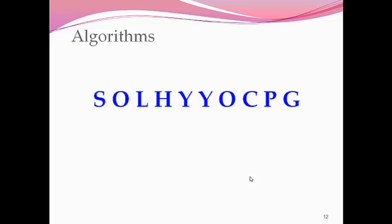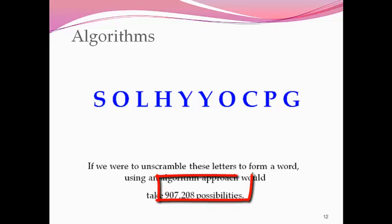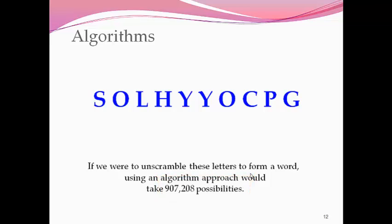Let's take a look at an example. You may have seen this in the textbook. What if we were trying to unscramble this list of letters to find a target word? If we were to use an algorithm and unscramble all the possibilities we could create words from this list of letters, it would be over 900,000 possibilities. Imagine how long that would take - years, of course.